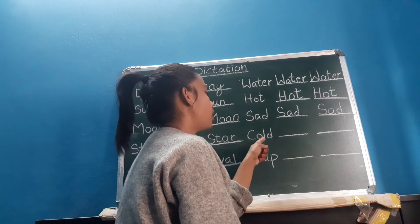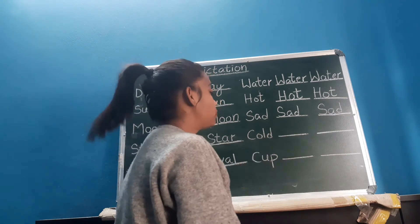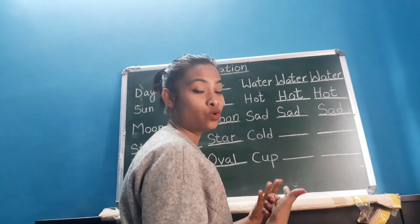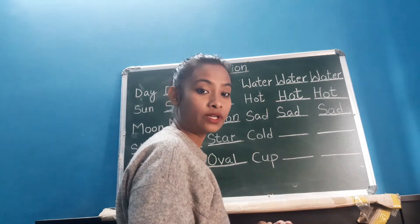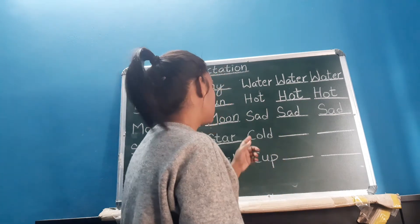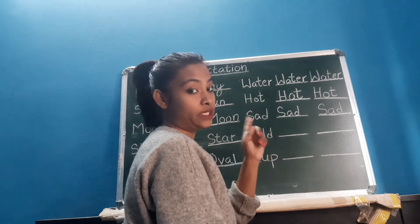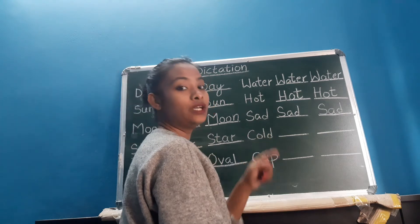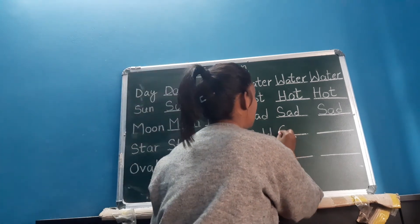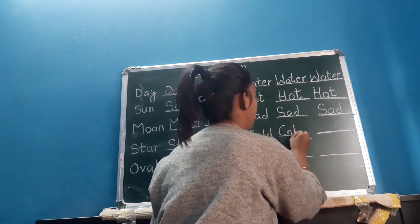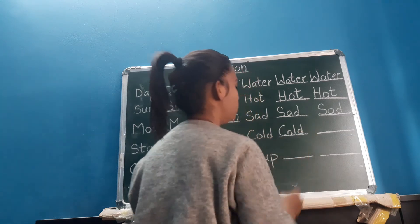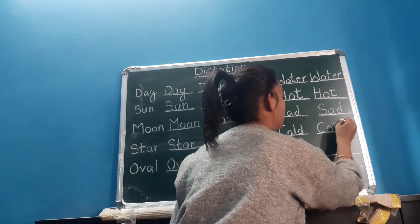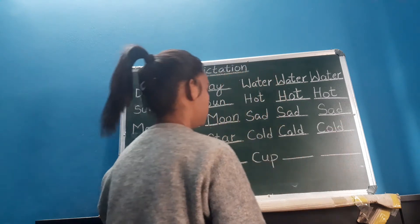Next: cold. C, O, L, D — cold. During winter, you feel cold, yes? And what do you do? You wear a sweater, isn't it? C, O, L, D — cold. This is the spelling of cold: C, O, L, D — cold. C, O, L, D — cold. Once more, C, O, L, D — cold. All right?